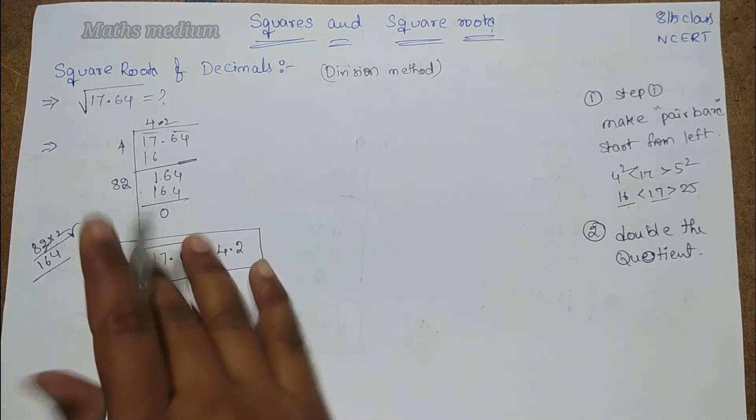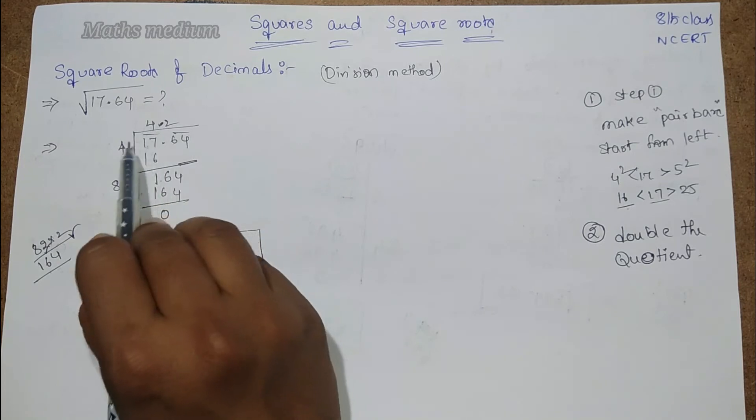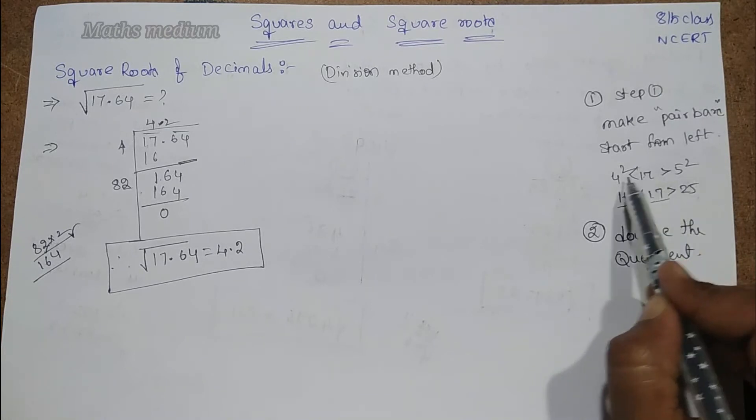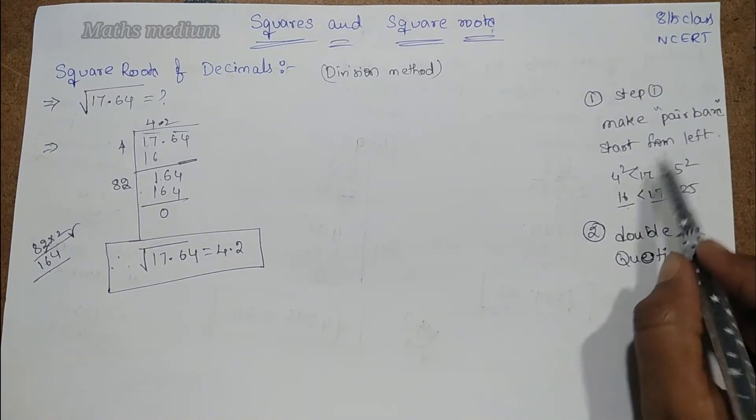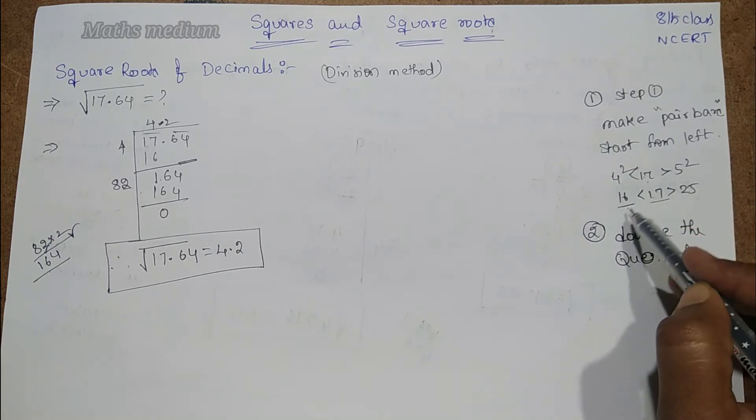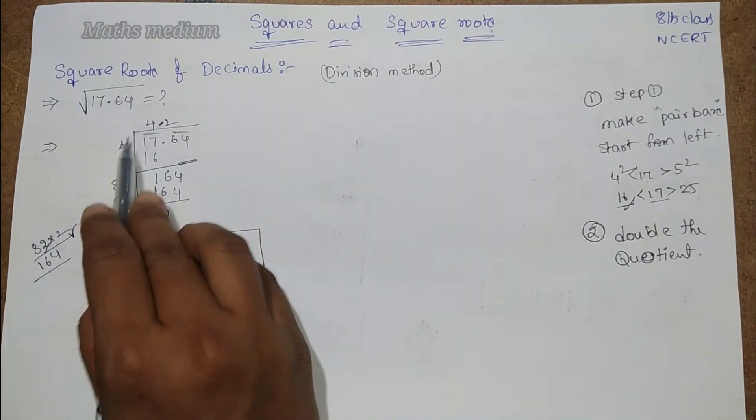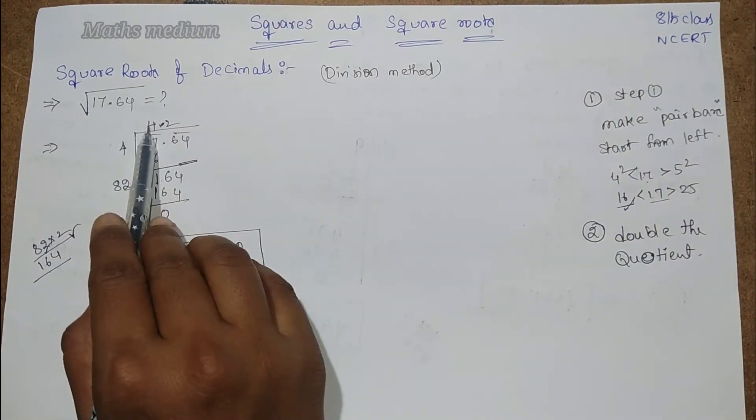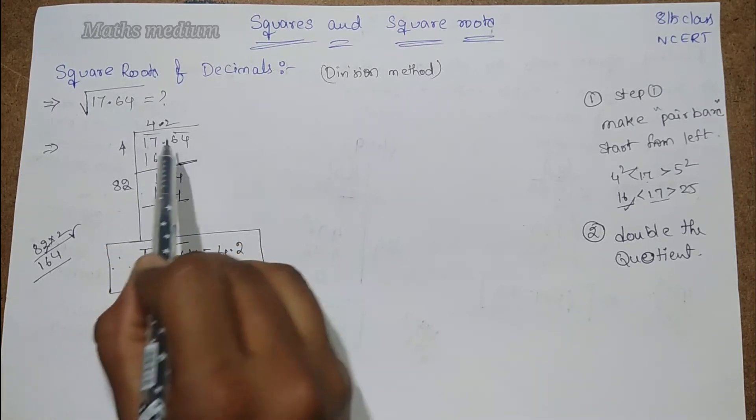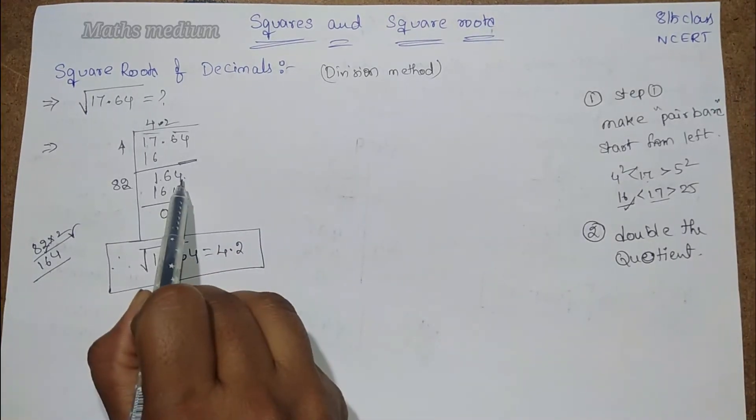I will explain it again. See, here is the 17.64 is the given one. Make the pair bars. Start from left one. And, choose this one as between the two perfect square numbers. So, this is the 17 in between 4 square and 5 square. So, let's take the small number for the best divisible purpose. So, 16 is the 4, 4's are 16. So, quotient is 4. 4, 4's are 16. 17 minus 16 is 1. Now, write down 64 as it is. Now, here 164 as the answer.